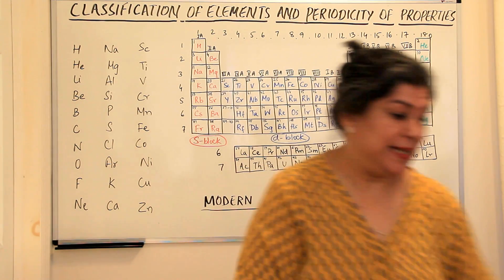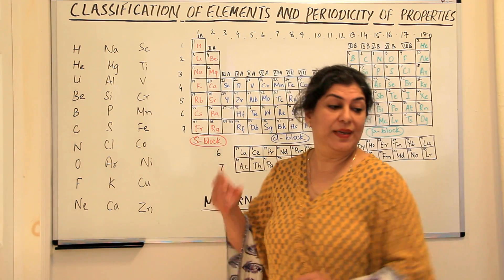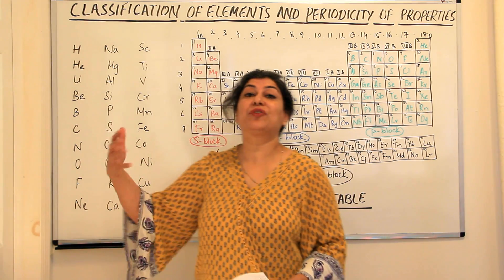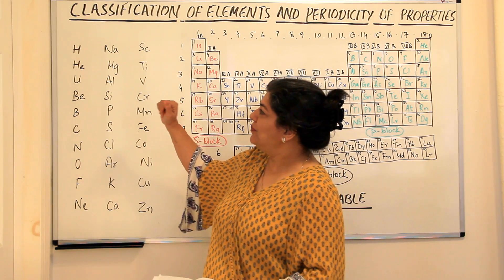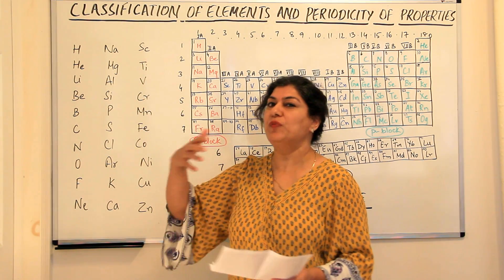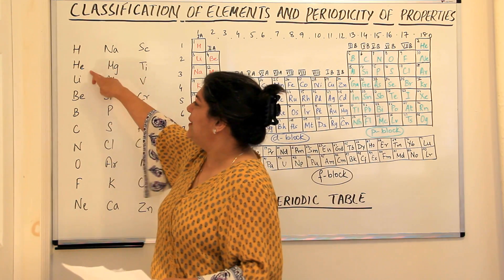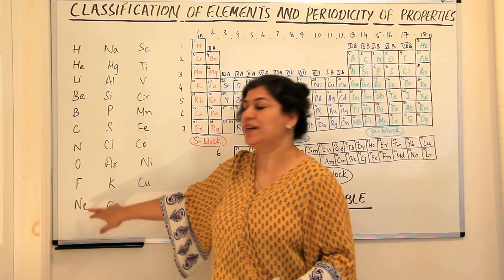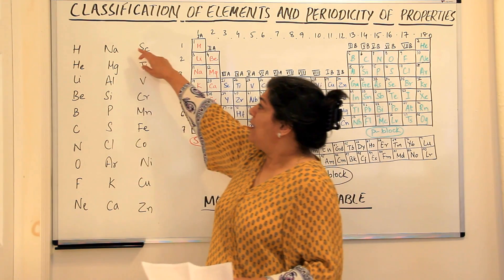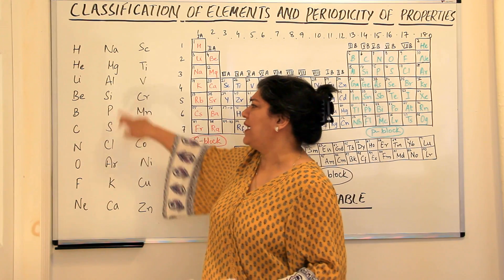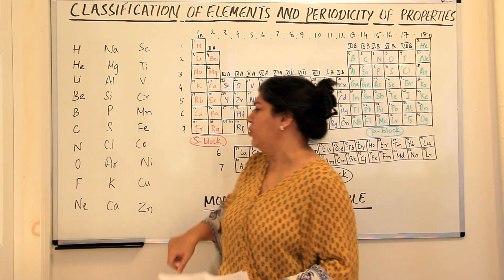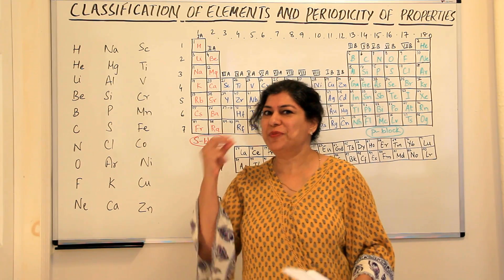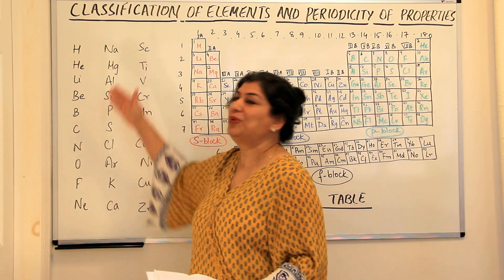So those were the first 20 elements. I just came across another way that someone has tried — they made a sentence out of the first 20 elements. For example: 'Hello Helena, listen babe, before coming never offend Flavia Nelson. Now Maggie, don't allow Silas to pass so close after kissing Carol.' Just a sentence — you remember it in sequence to know the elements.